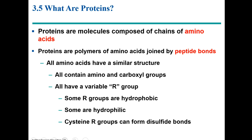Proteins are molecules composed of chains of amino acids. Proteins are polymers of amino acids joined by peptide bonds. All amino acids have a similar structure. All contain amino and carboxyl groups. All have a variable R group. Some R groups are hydrophobic, some are hydrophilic, and cysteine is an R group found on some amino acids that can form disulfide bonds.